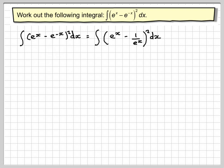So we should write e to the minus x as 1 over e to the x, and then use a minus b all squared as a squared minus 2ab plus b squared.